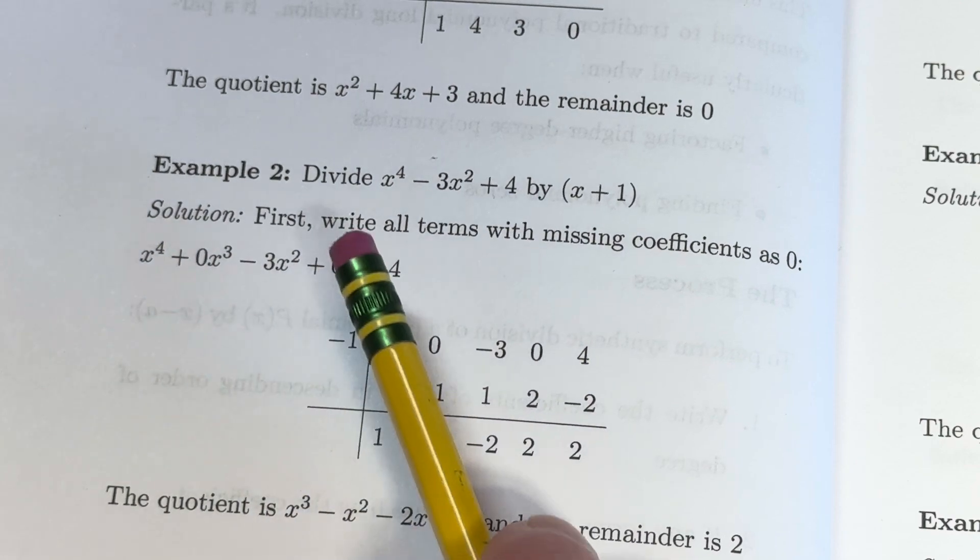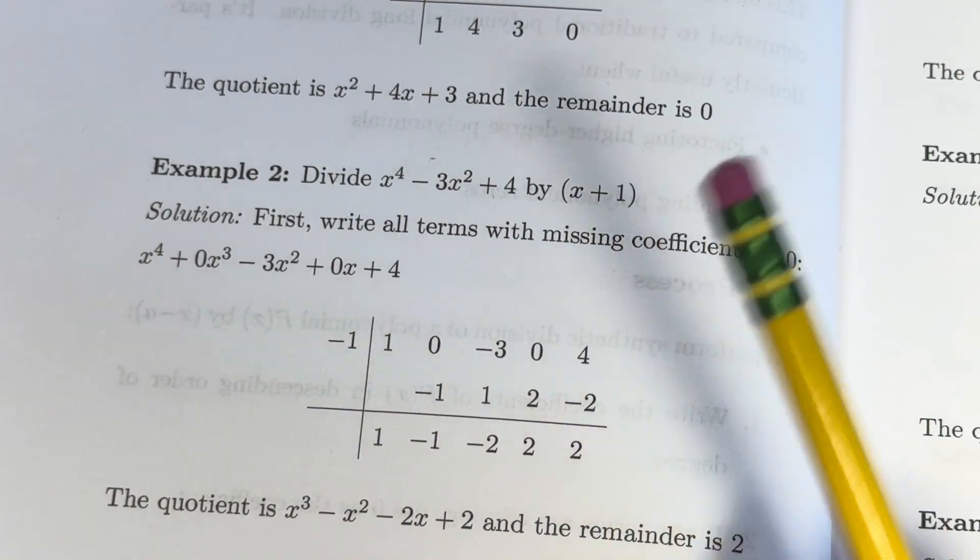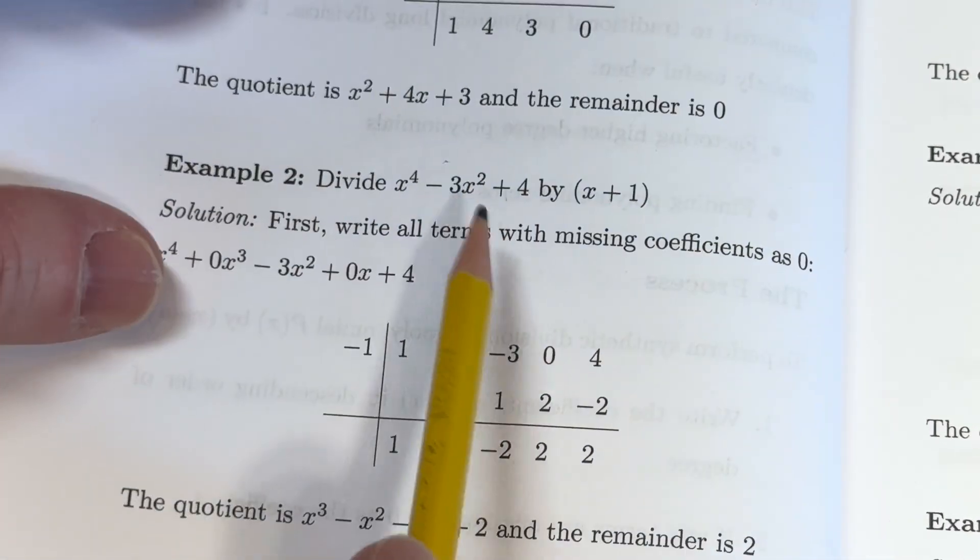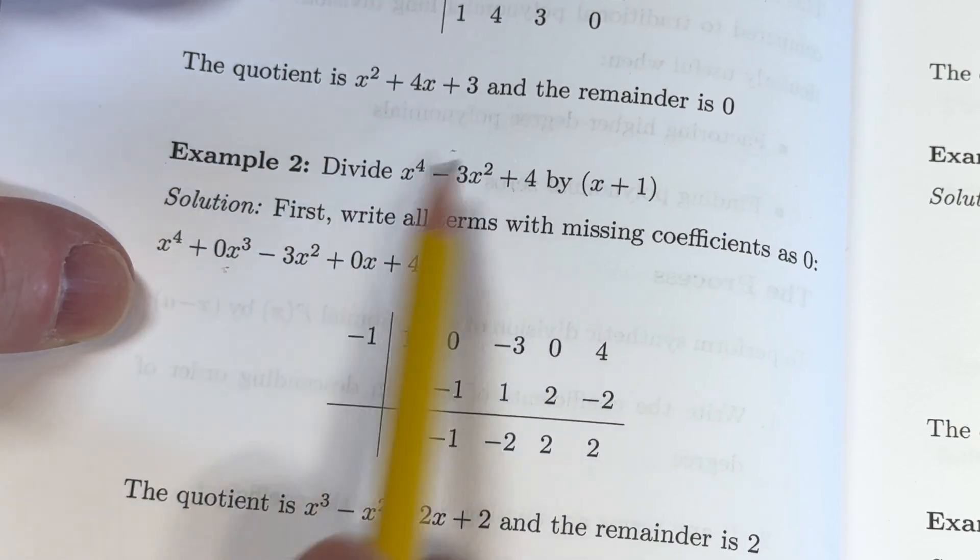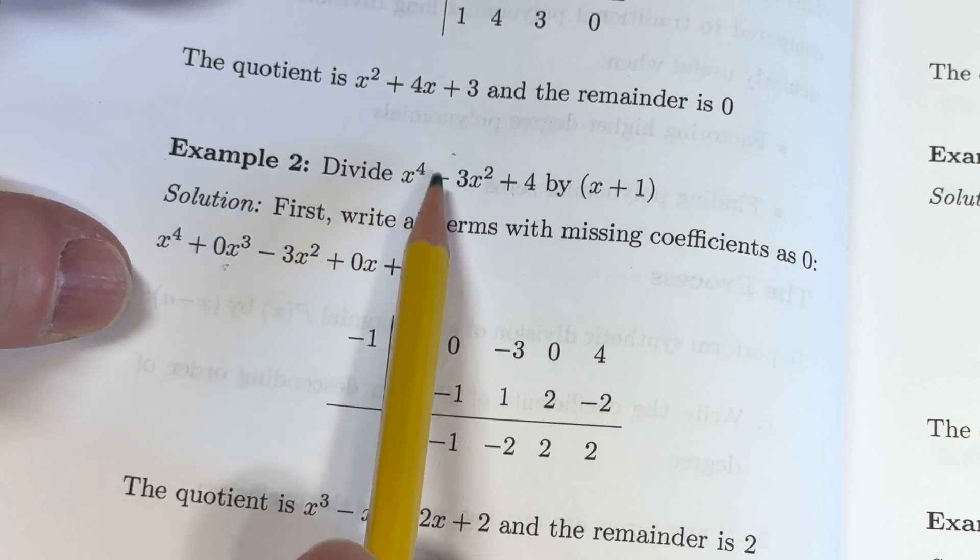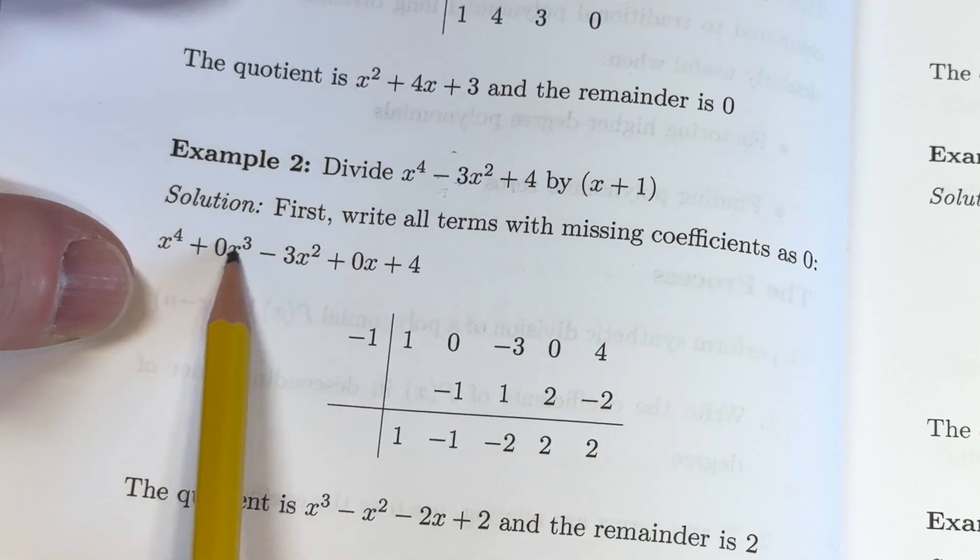So the first thing to do is to write down all the coefficients. So notice here how I've inserted the 0 here in place of the missing term, right? Because there's no x cubed term. Well, actually there is. It's 0x cubed.